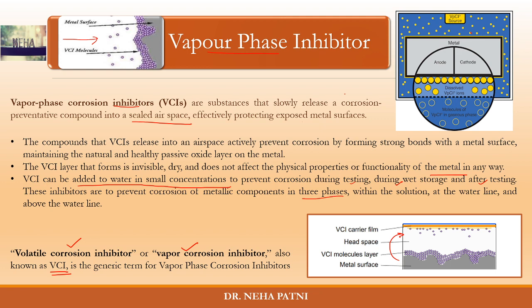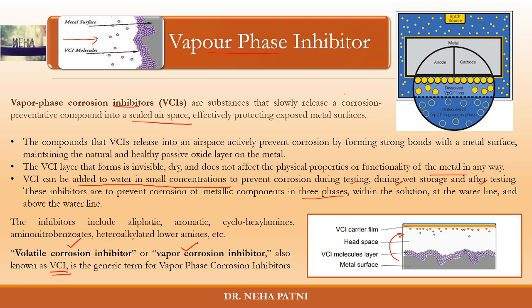There are many inhibitors you can use, such as aliphatic amines, aromatic cyclohexylamines, amino nitrobenzenes, and other amines. These are the materials which can be used as vapor phase corrosion inhibitors.